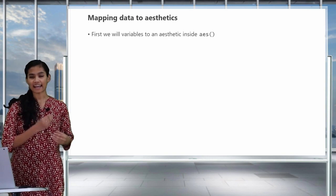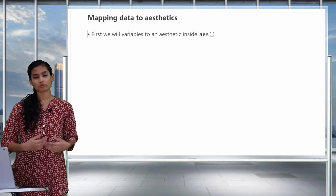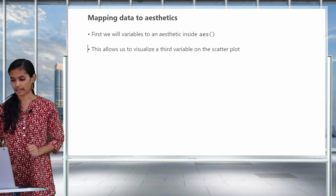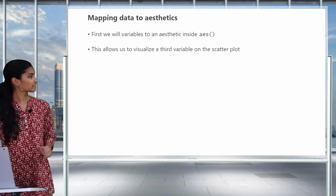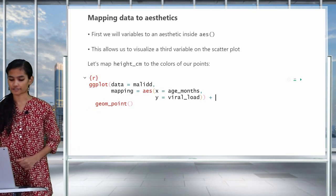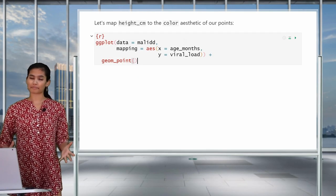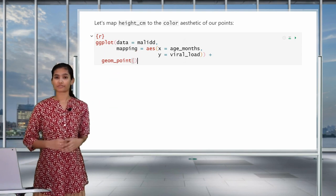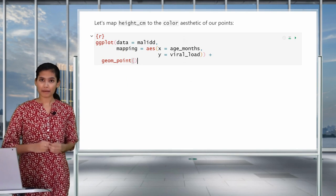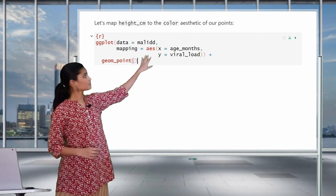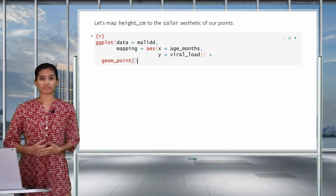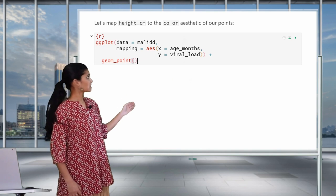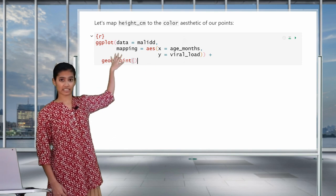First, we're going to map variables to aesthetics in our plot. Before, we had the x and y aesthetics inside AES. Now we will add color. This will allow us to visualize a third variable on our two-dimensional scatterplot. This is the code we used to create the original scatterplot. So now let's map the patient's height, measured by the variable heightcm, onto the color of our points. So when we want to map an aesthetic, we add it inside the AES function.